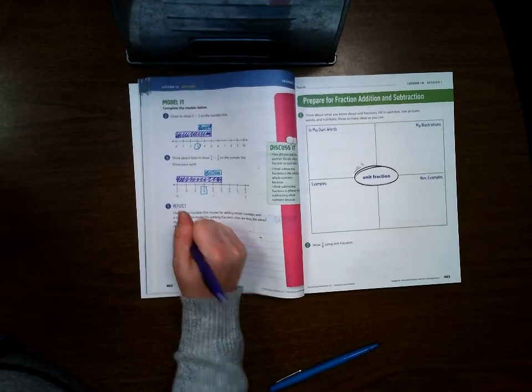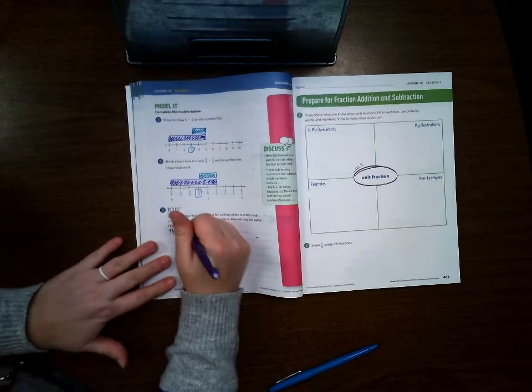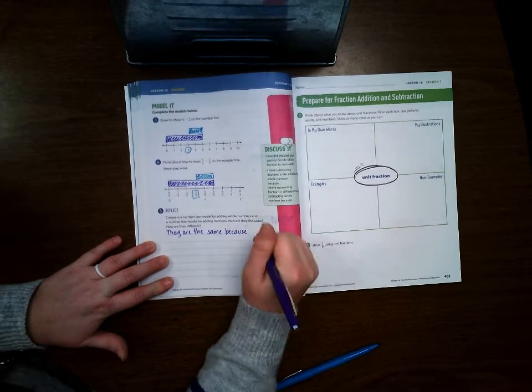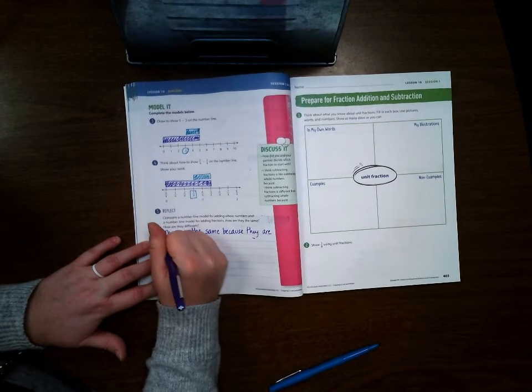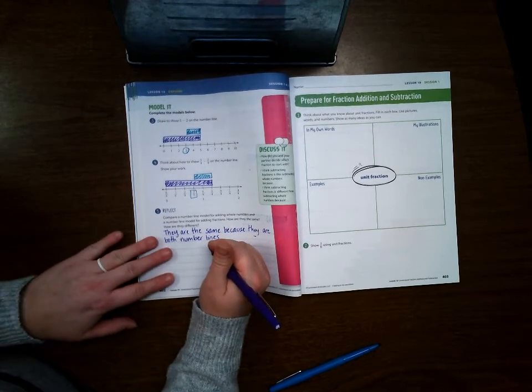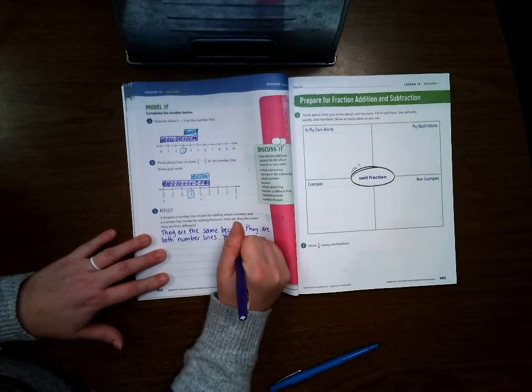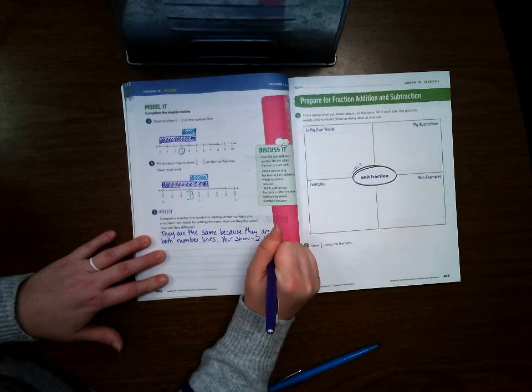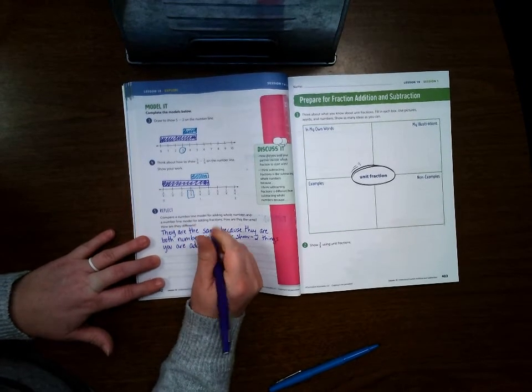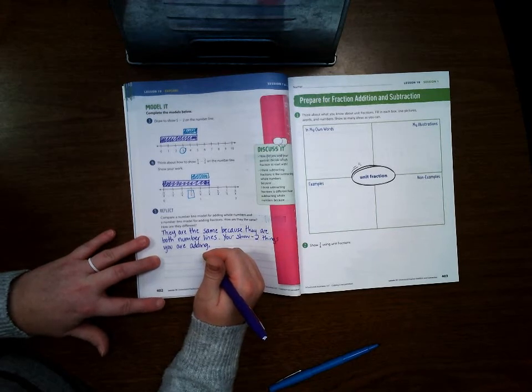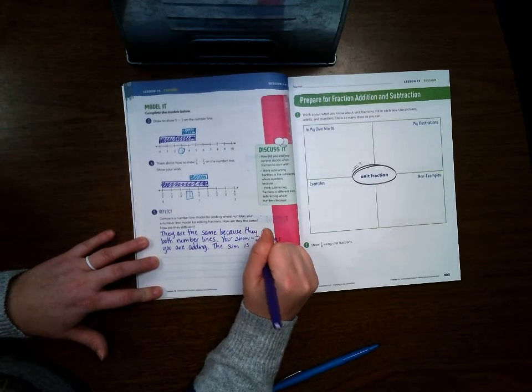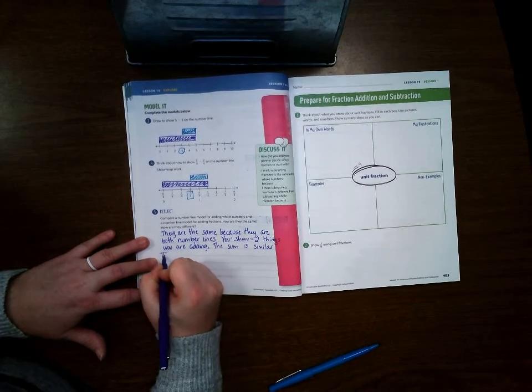Okay, so hopefully you have something right here along the lines that they're the same because they are both number lines, and you show two things you are adding, and the sum is similar.